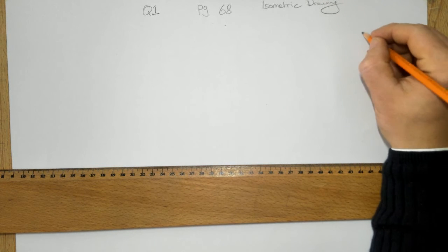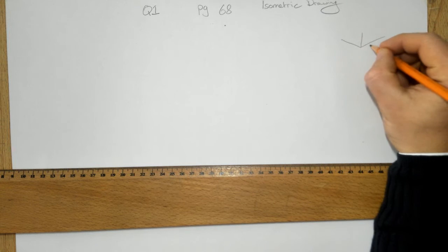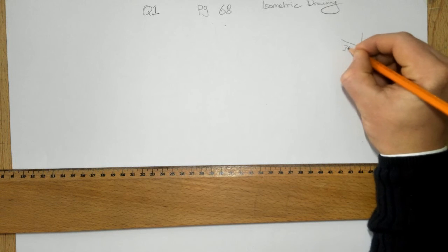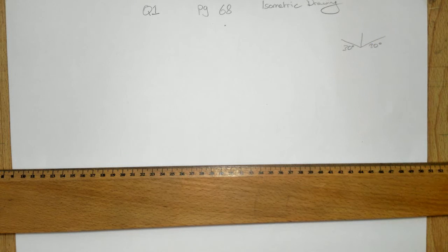Okay, so isometric drawing is different because instead of 45, you're drawing at 30 degrees. First thing I'm going to do is go down here where you can see.